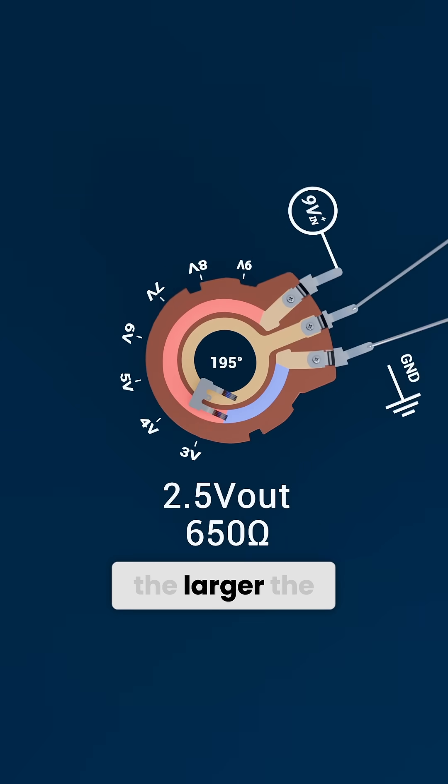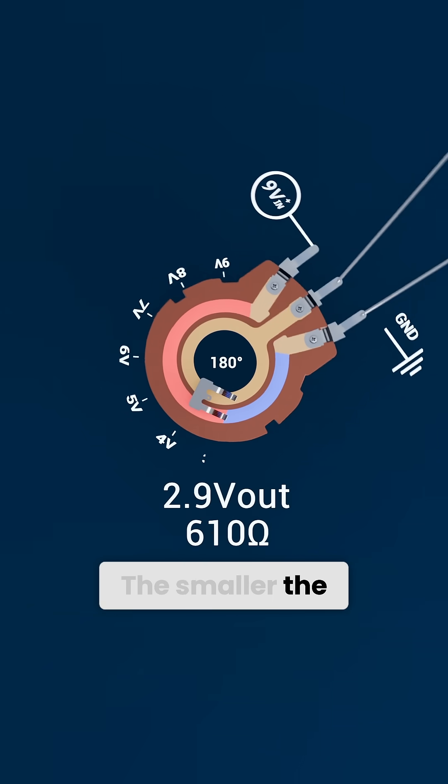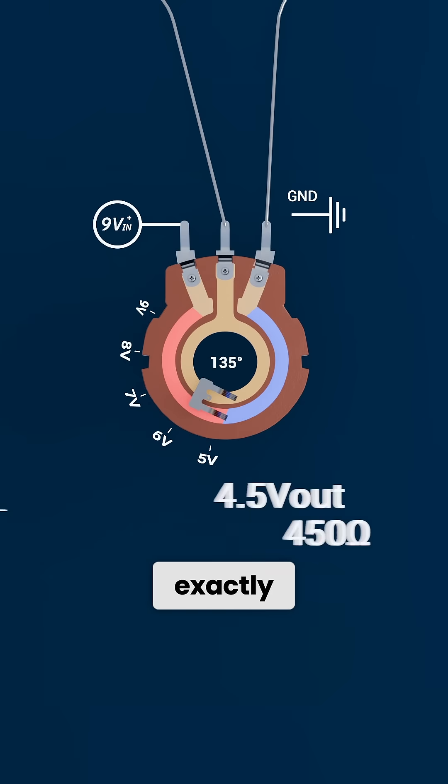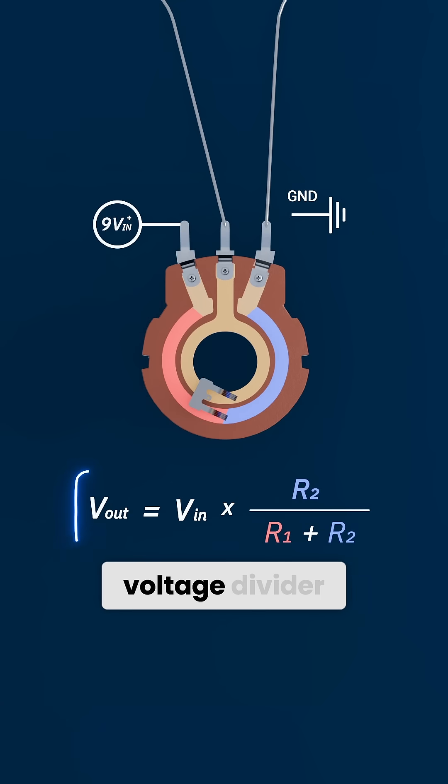The larger the resistance, the larger the voltage drop. The smaller the resistance, the smaller the drop. And this proportional dropping of voltage is exactly what gives us the voltage divider equation.